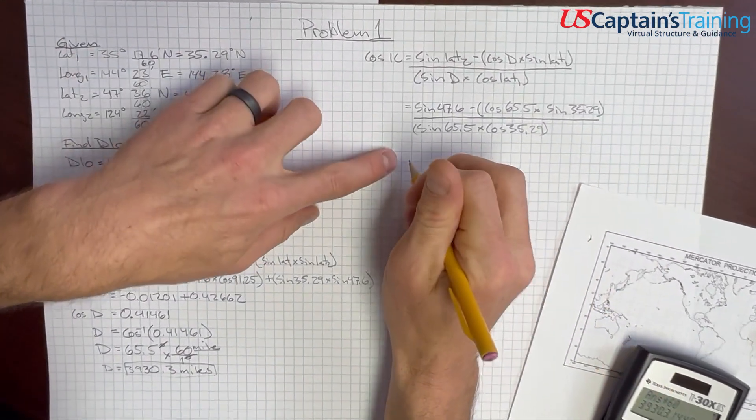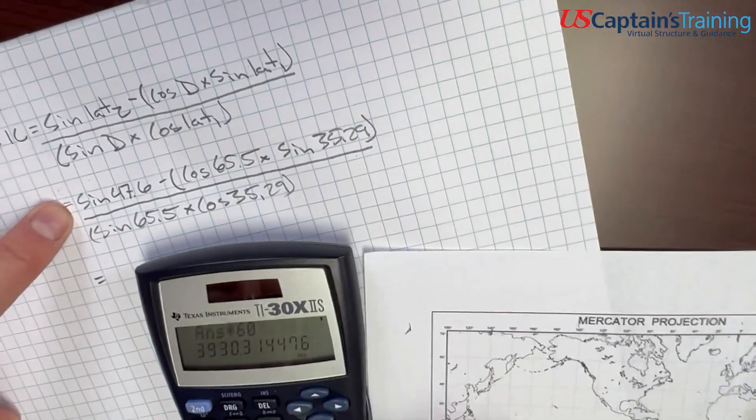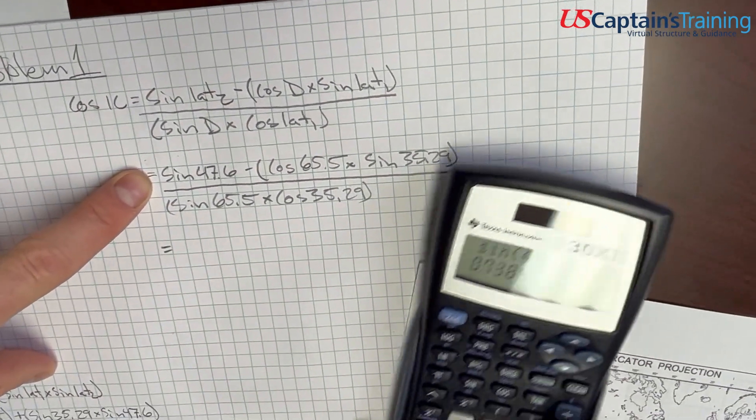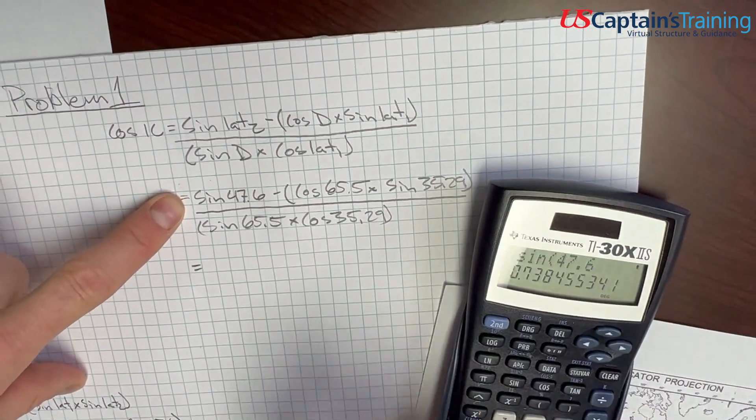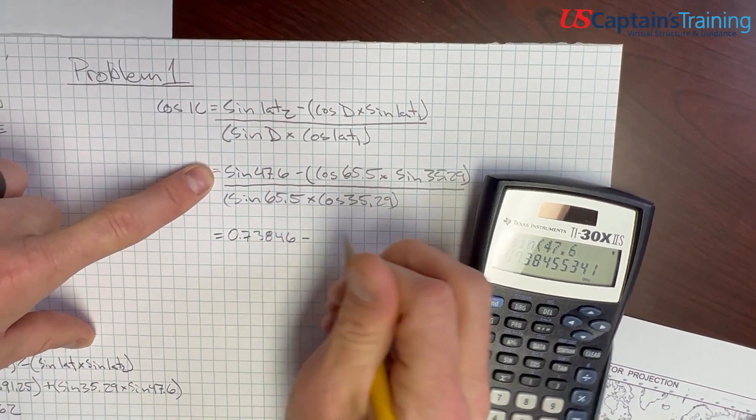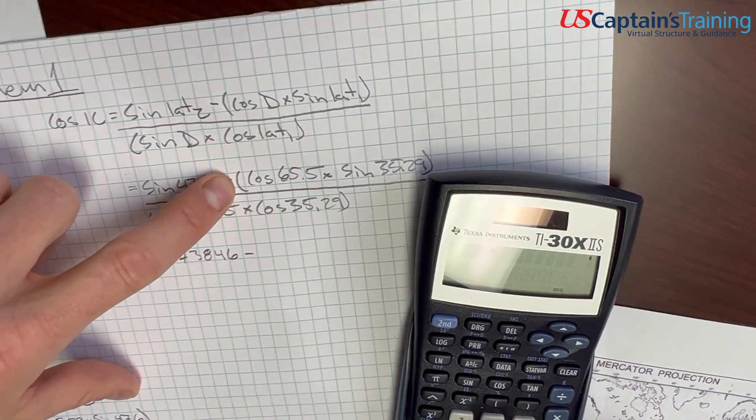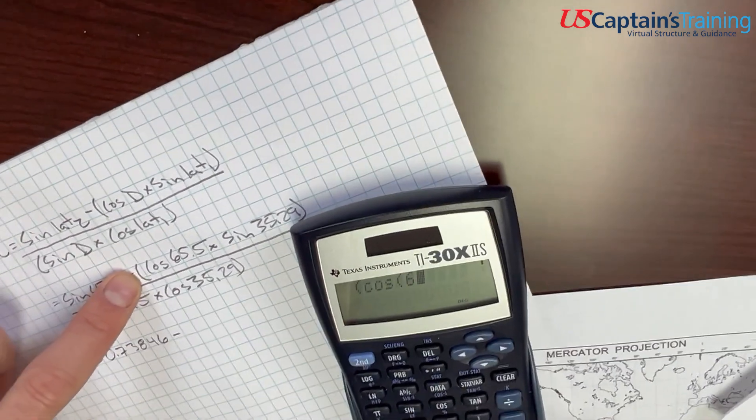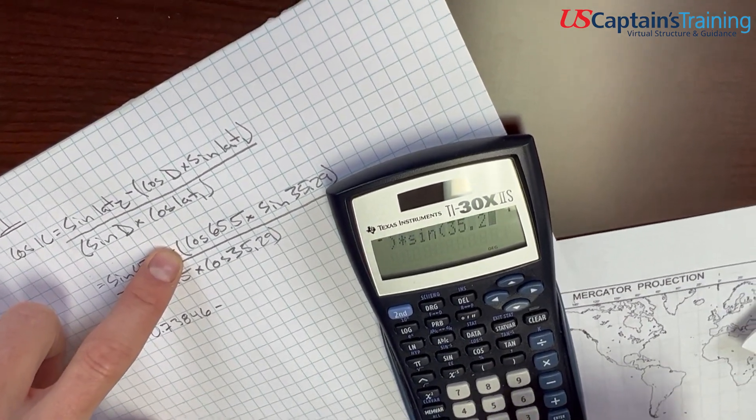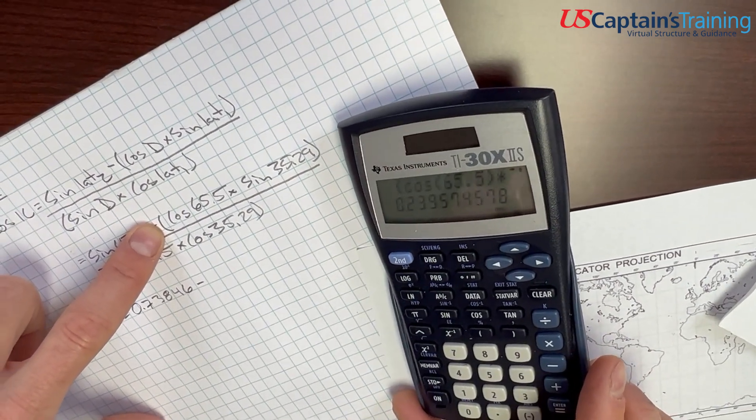Now, let's crunch these numbers. So, sine 47.6 equals 0.73846, minus, and we'll get this number. So, we're going to open the parentheses and say, cosine 65.5, close, times sine 35.29, close, close, equals 0.23957.